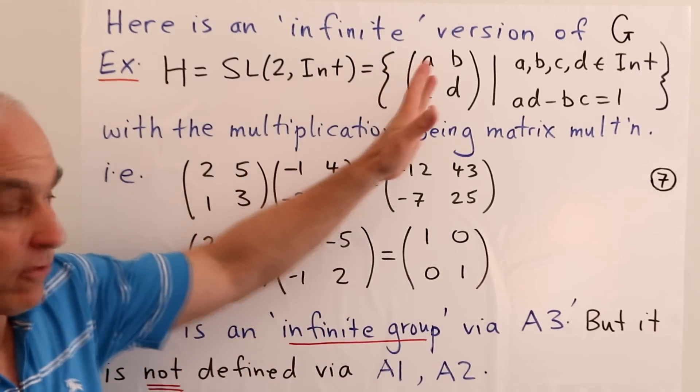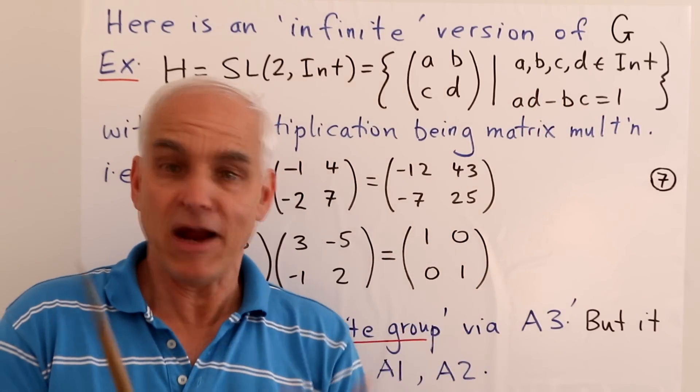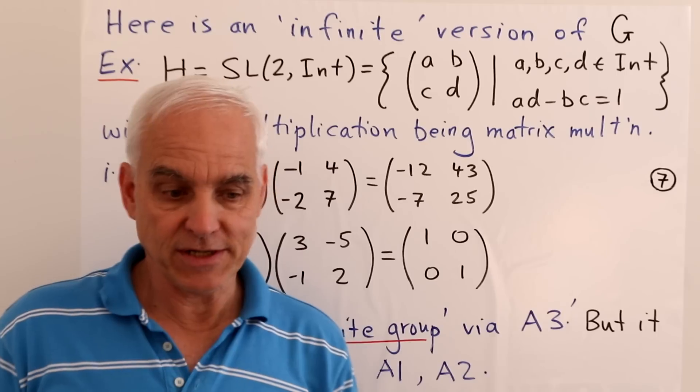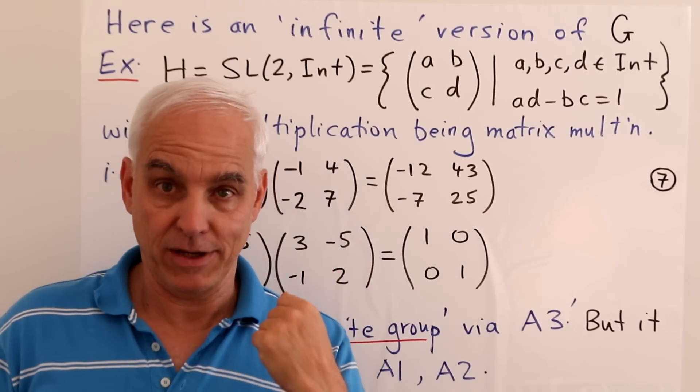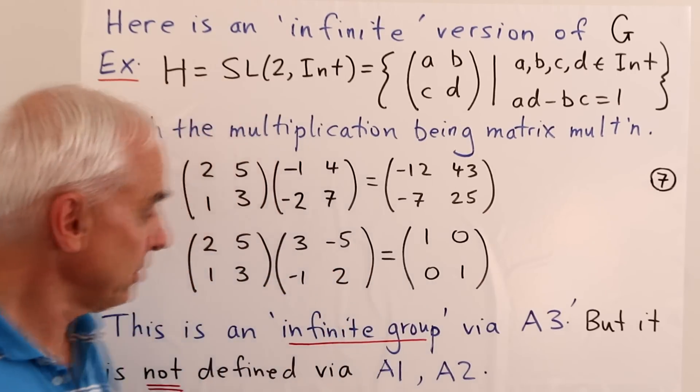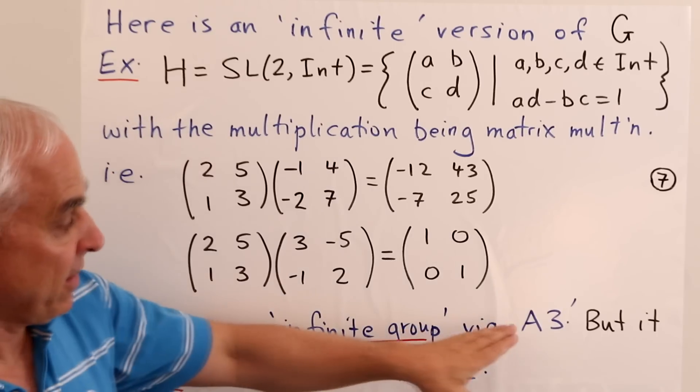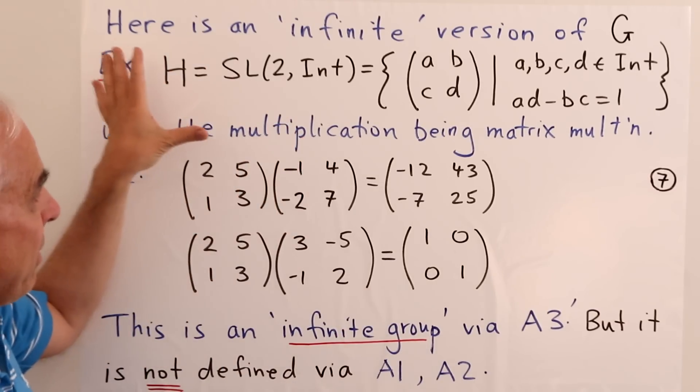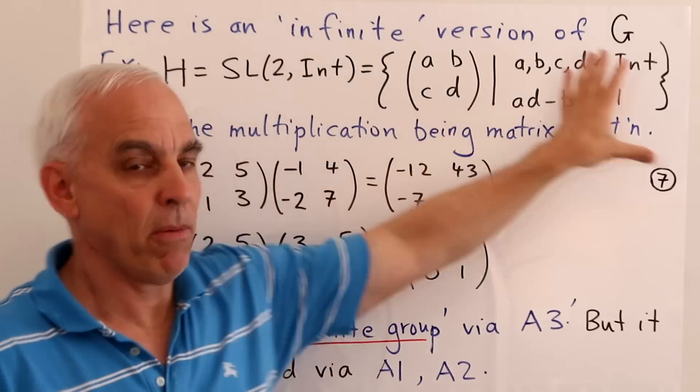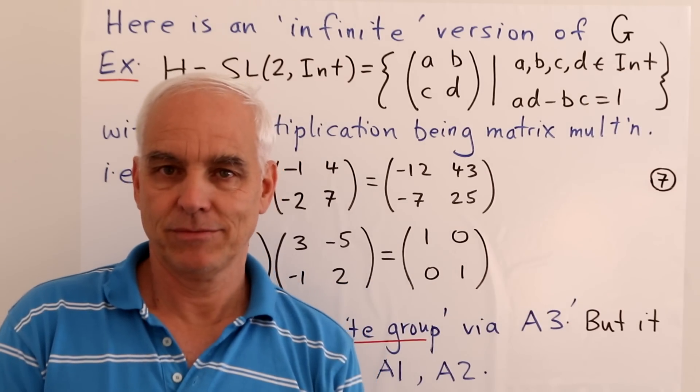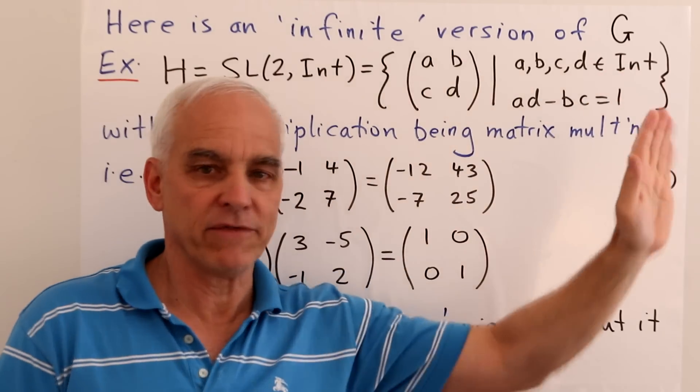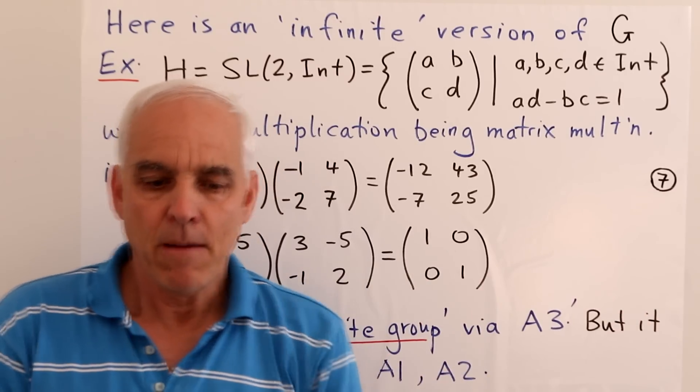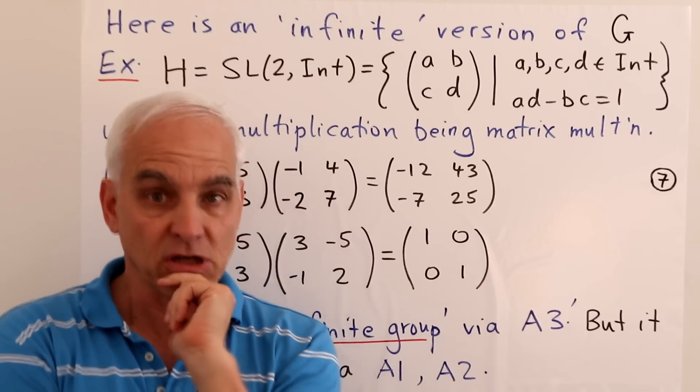So this is a very interesting group. And it's actually a group that's studied very much in number theory, and in geometry as well. So it's a very important group mathematically, SL2 over the integers. But it's an infinite group via this A3 prime. So in modern mathematics, we do not have any problems with making a definition like this. So this would be absolutely routine kind of definition that you would find in mathematical papers throughout the subject.